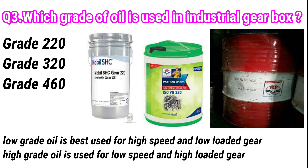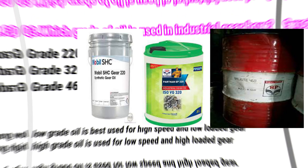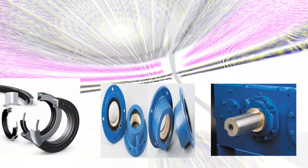The next question: which grade of oil is used in an industrial gearbox? Basically there are three grades of oil used in industries: 220, 320, and 460. Low grade oil is best used for high speed and low loaded gears, like gear oil grade 220, whereas high grade oil is used for low speed and high loaded gears, like gear oil grade 460.